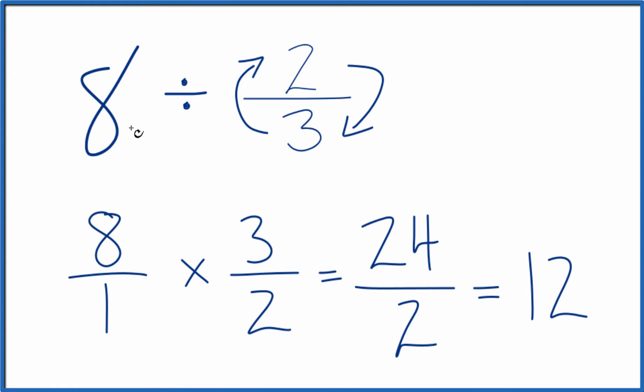So in answer to our question 8 divided by 2 thirds, that gives us 12. And if you multiply 12 times 2 thirds, you get 8.